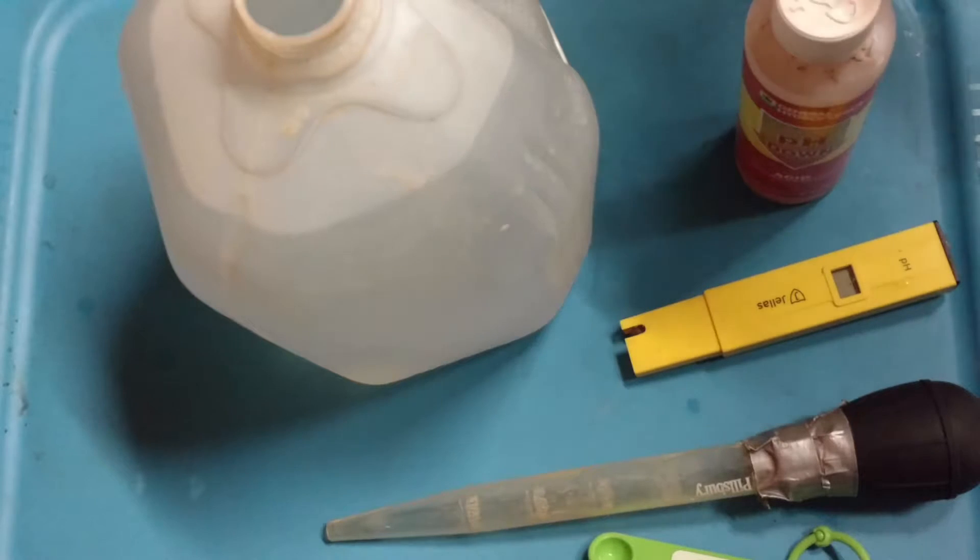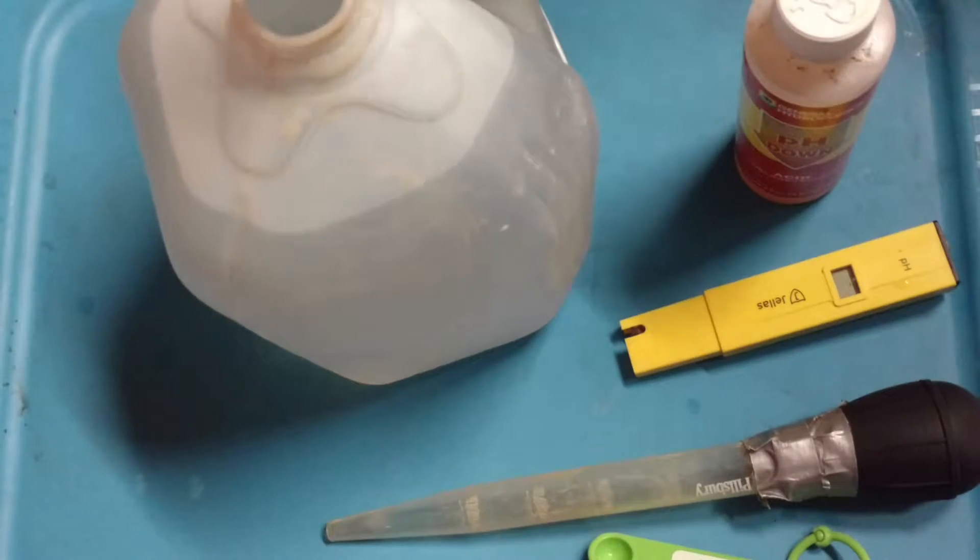The hardest thing about getting the tap water just right is you gotta remember to get the water before your plants need water. You get your water a day ahead of time, leave it out, let it sit without a lid on it for 24 hours. That way the chemicals that are in it that are good for people and bad for plants can evaporate out of them.